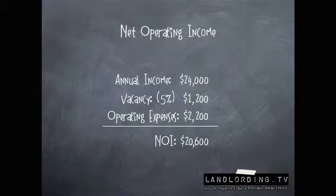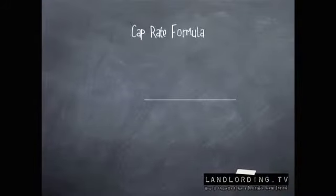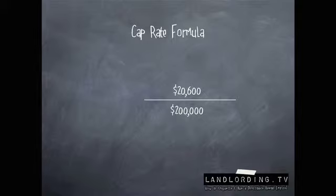Your net operating income for that first year would be roughly $20,600. This is very ballparked, and as you can see it's something you can just put together quickly. So if we run that in our cap rate formula: $20,600 divided by $200,000 — $200,000 is arbitrary; I'm just saying that's the cost of a potential property that you're looking at, listed for $200,000. The cap rate is 10.3 percent.